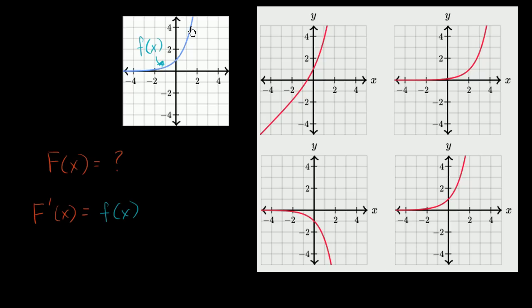One thing we know is it's always positive. As we go to negative infinity, it asymptotes towards zero, but it's always positive. So since this is describing the slope of one of these, that means that the slope of the candidate has to always be positive. The slope of the tangent line here is indeed always positive for these, but for this other one it's negative — when we increase in x, we decrease in y. So we can rule that one out.